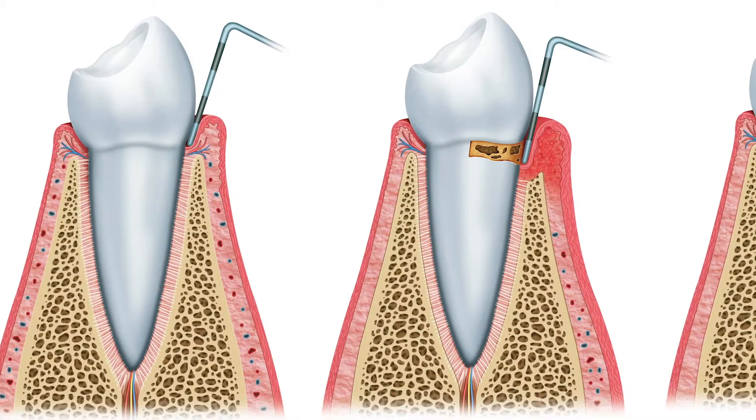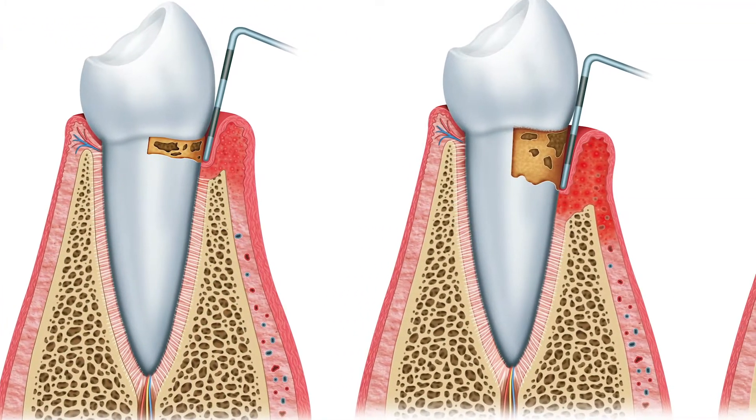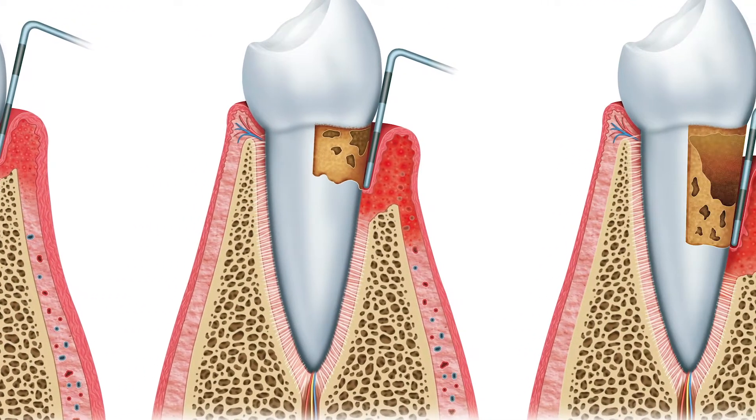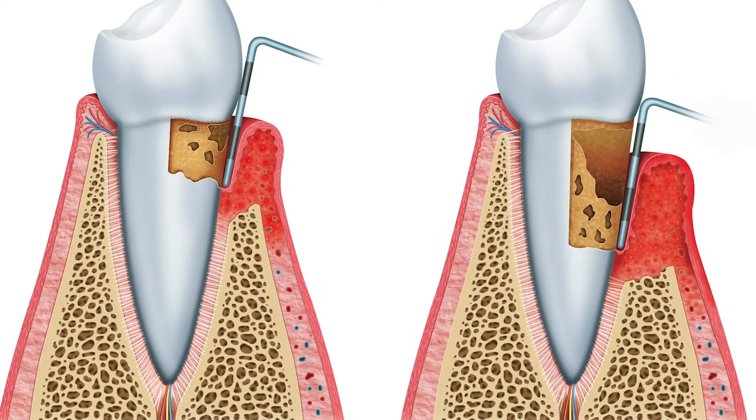Gum disease is really a multitude of diseases. We have the early phase, which is called gingivitis, which is just inflammation of the gums. But then if it invades into the bone, then we get periodontitis. What that means is that there's bacteria found in the little gum pocket, which is the space between the gum and the tooth, that eat away the bone around the tooth until eventually you could have tooth loss.